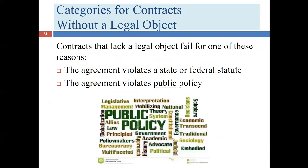A contract has to have a legal object, but what do we mean by that term? Our first thought might be to find a statute or case law that tells us what the law is — it might be a state law, a federal law, or even a local ordinance. For example, going back to the idea of the beer keg, we would go to the Texas alcohol code and find out the rules about selling alcohol to people under 21. There's a statute that answers this question clearly.